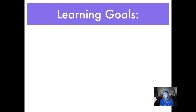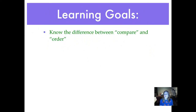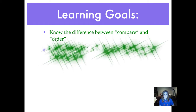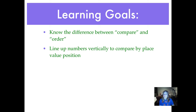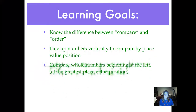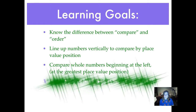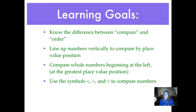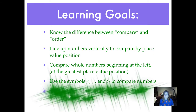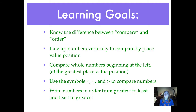Our learning goals for this individual lesson are: to know the difference between the term compare and the term order; to line up our numbers vertically to compare them by place value position; to compare whole numbers beginning at the left end of the numbers, which is where the greatest place value position is; to use the symbols less than, equal to, and greater than to compare numbers; and to write numbers in order from greatest to least and least to greatest.